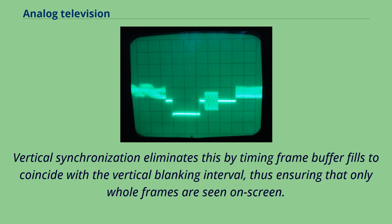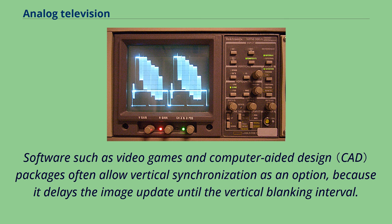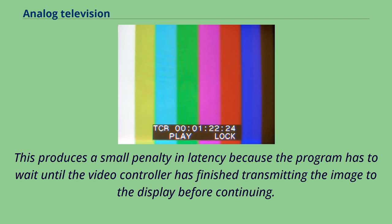Two timing intervals are defined: the front porch between the end of the displayed video and the start of the sync pulse, and the back porch after the sync pulse and before the displayed video. These and the sync pulse itself are called the horizontal blanking interval and represent the time that the electron beam in the CRT is returning to the start of the next display line.